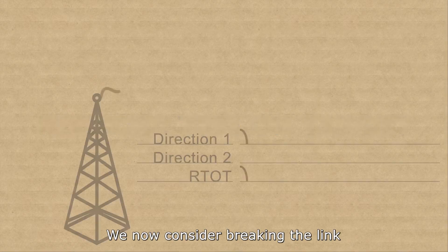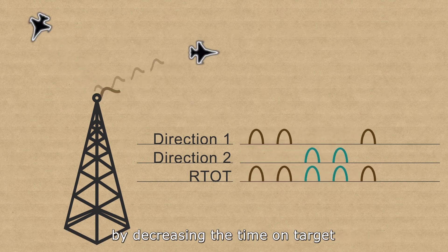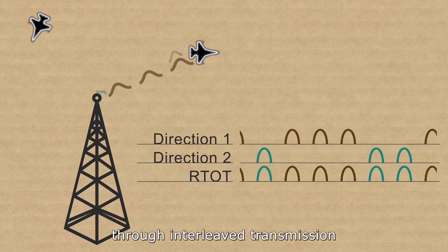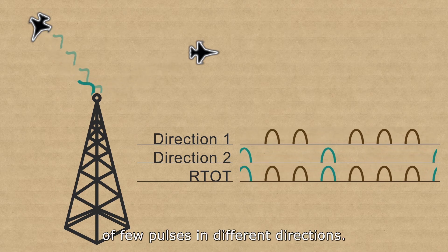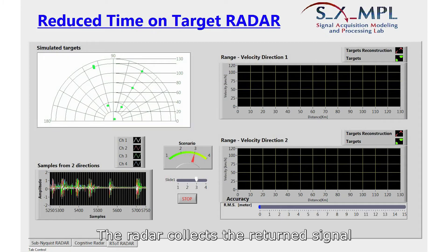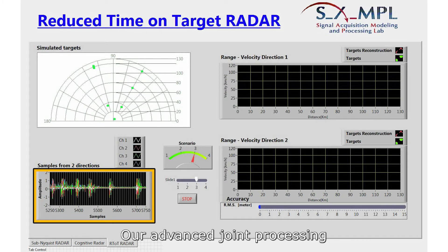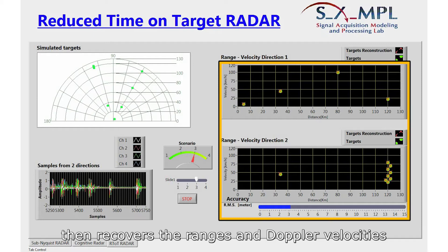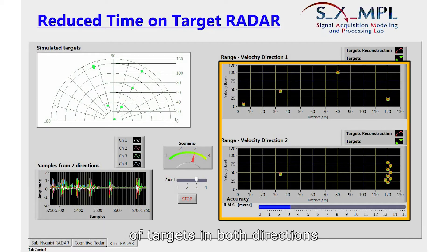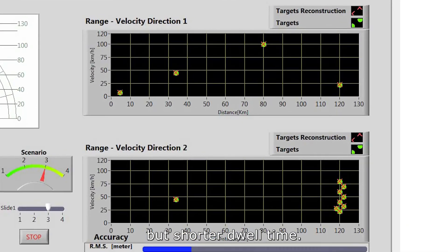We now consider breaking the link between the dwell time and Doppler resolution by decreasing the time on target through interleaved transmission of a few pulses in different directions. For example, here the targets lie in two different directions. The radar collects the return signal from each direction after non-uniform transmission of pulses. Our advanced joint processing then recovers the ranges and Doppler velocities of targets in both directions at native Doppler resolution but with shorter dwell time.